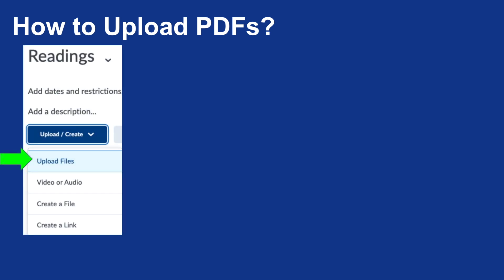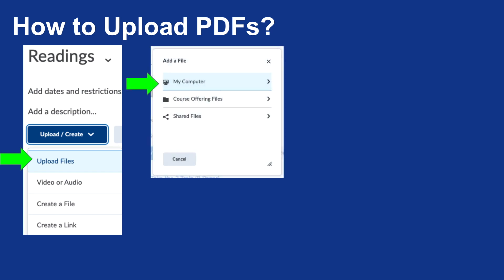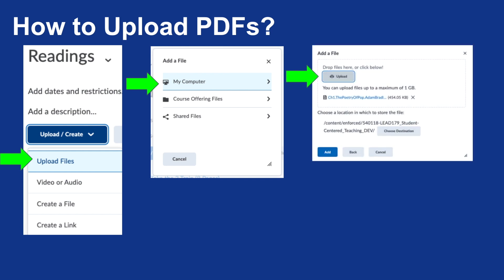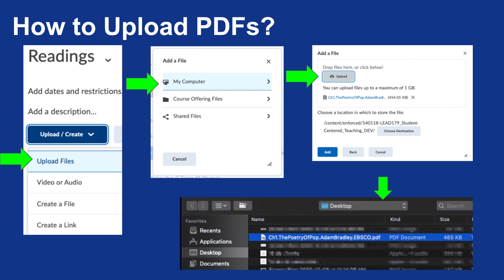So how do we upload those PDFs into D2L Brightspace? From within your course and within any module from that course, you'll be clicking on the blue Upload/Create button and choosing Upload Files. Then choose My Computer. Finally, you'll click on the Upload button. This will open a pop-up window on your computer where you can select that PDF from your computer. Alternatively, you can simply drag that item onto the gray Upload button. After it's fully added, you will click on the blue Add button to add it to your course.